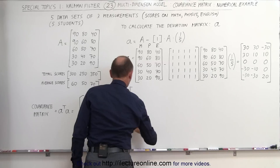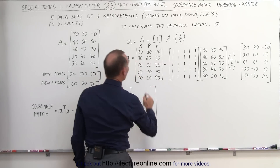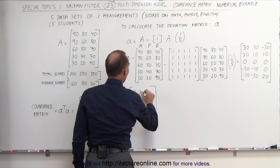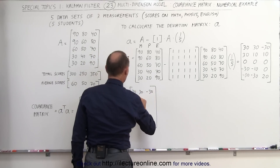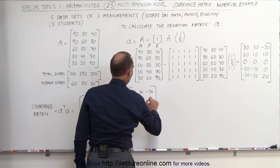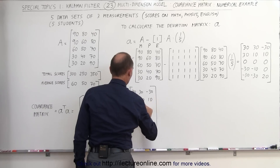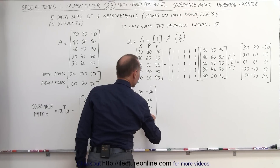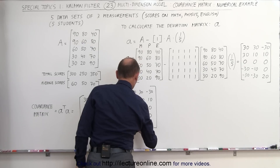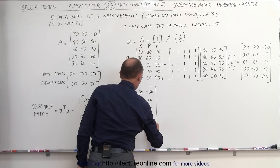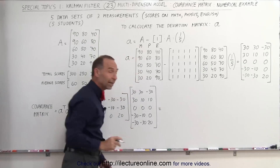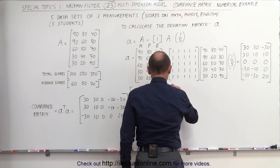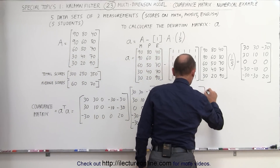Then we multiply the transpose times the actual deviation matrix. The deviation matrix has columns: 30, 30, minus 30; then 30, 10, 10; then 0, 0, 0; then minus 30, minus 10, and 0; and finally minus 30, minus 30, and 20. When we multiply these together, we get the covariance matrix, which will have nine elements — the diagonal elements and the off-diagonal elements.